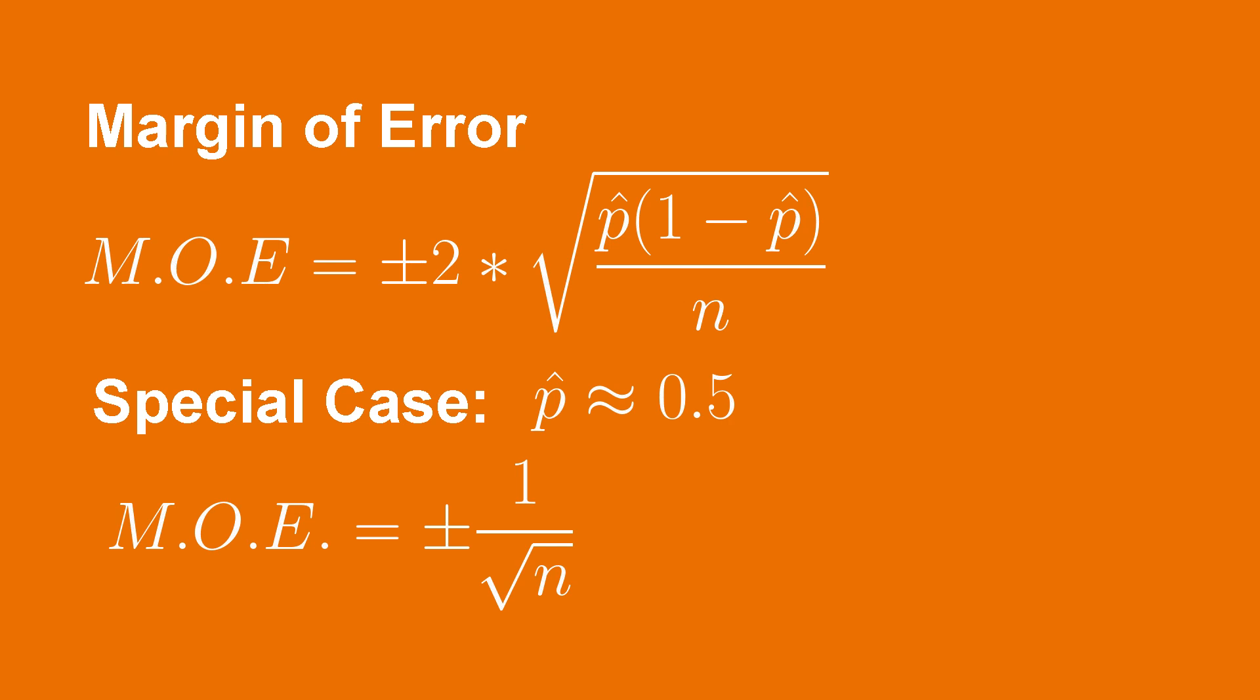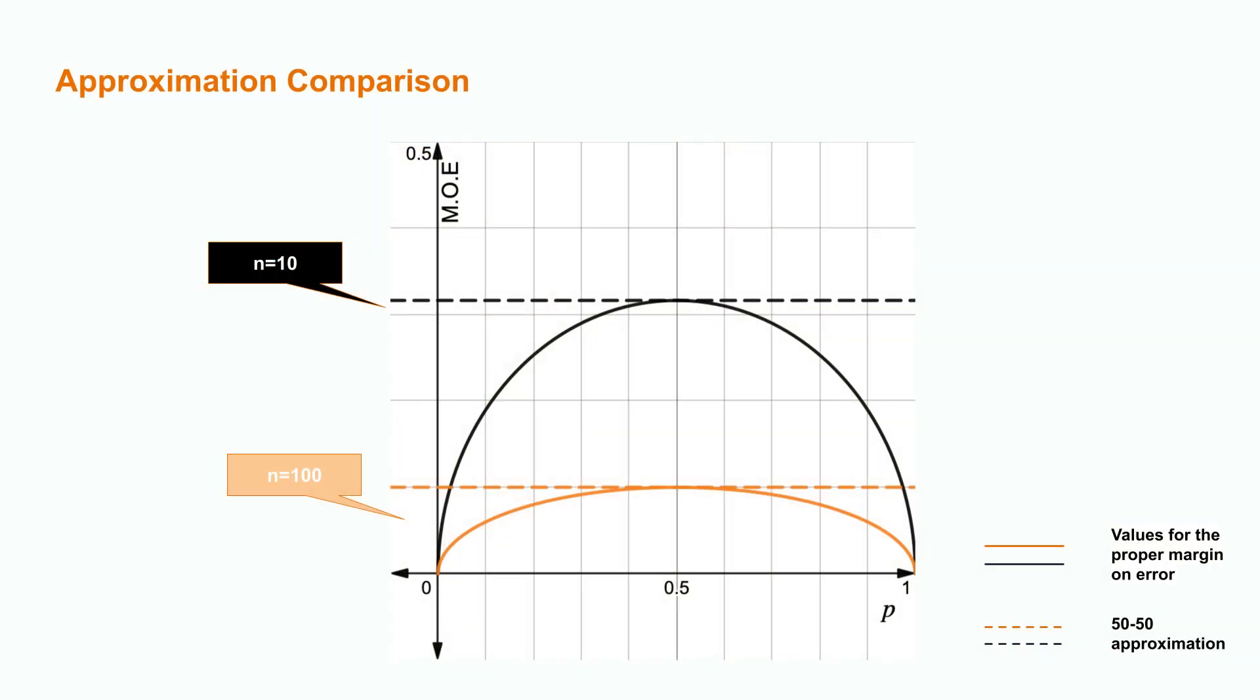Now, how accurate is this estimation for different sample means? This image includes a graph of this margin of error and 50-50 approximation for the case of a sample size of 10 and for a sample size of 100. The dashed lines refer to the 50-50 approximation, and because that approximation is not dependent on the sample proportion, it is constant from 0 to 1. The solid lines are the values for the proper margin of error depending on the sample proportion.